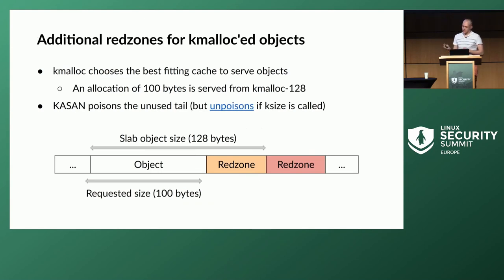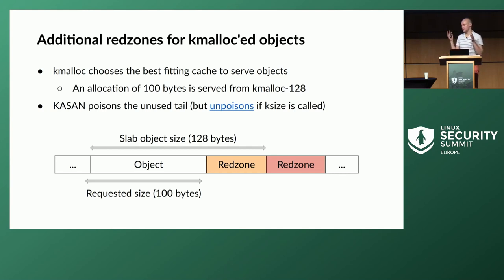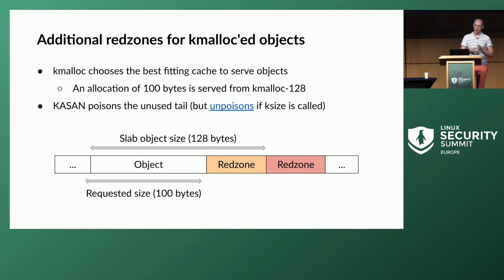For kmalloc, KASAN has additional red zones. When you use kmalloc to request a certain size — for example 100 bytes — the slab allocator serves it from the best fitting kmalloc cache, such as kmalloc-128. But the kernel should not access bytes past the requested 100 even though it has 128. So KASAN adds an additional red zone after the requested 100 bytes until the end of the object. If someone calls ksize after allocating this pointer, KASAN unpoisoned this smaller kmalloc red zone.